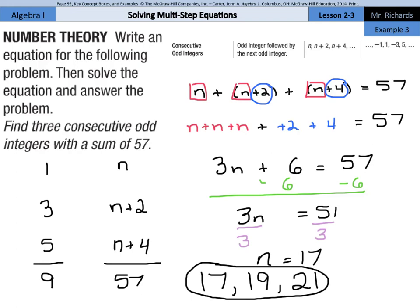And if you really wanted to check this, take a peek over here on the left. If we put 17 in for n, the next odd integer, n plus 2 is 19, followed by the next odd integer, 17 plus 4 is 21. And if you add those up, you get 57. So three consecutive odd integers that add up to 57 are 17, 19, and 21.